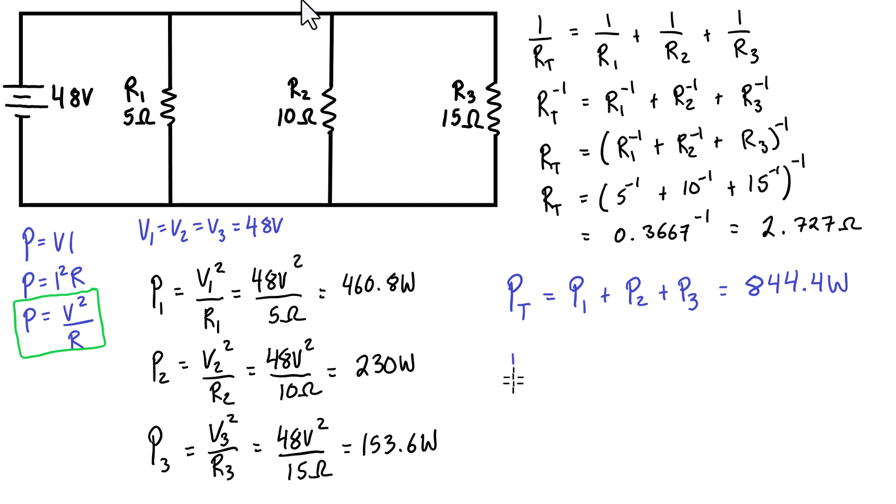Now we have resistance and voltage, so we're going to use the same power formula. PT for the power supply is VT—you can also write this as capital E for electromotive force—divided by the total resistance. When we check this, it's 48 volts squared over 2.727 ohms, and that works out to 844.8 watts.